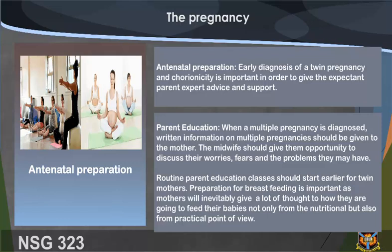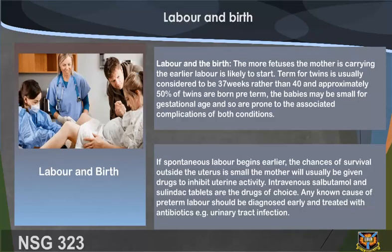Antenatal preparation: early diagnosis of a twin pregnancy and chorionicity is important to give expectant parents expert advice and support. When a multiple pregnancy is diagnosed, written information on multiple pregnancies should be given to the mother. The midwife should give them opportunity to discuss their worries, fears, and problems. Routine parent education classes should start earlier for twin mothers. Preparation for breastfeeding is important, as mothers will inevitably give a lot of thought to how they are going to feed their babies from both a nutritional and practical point of view.